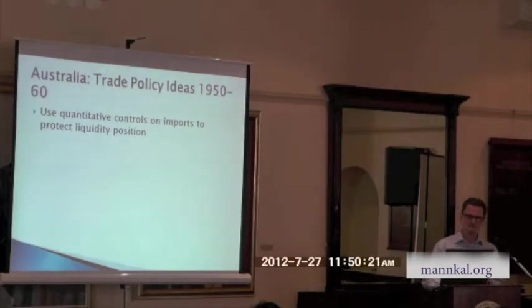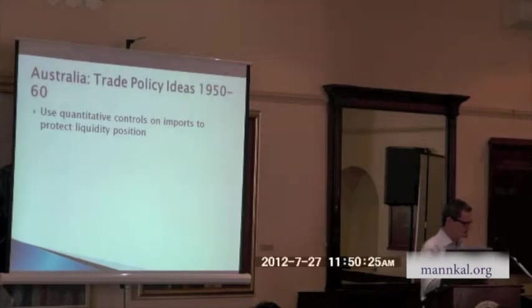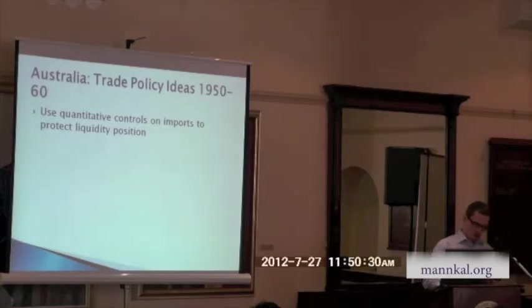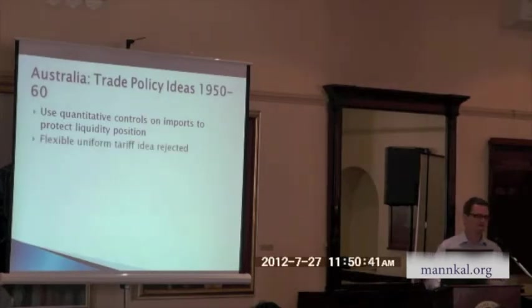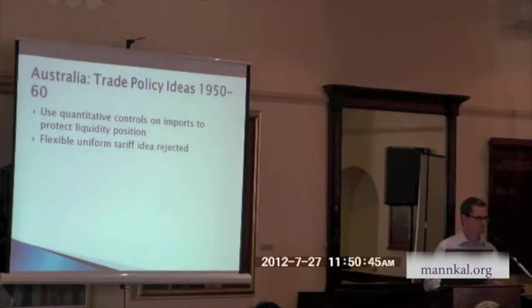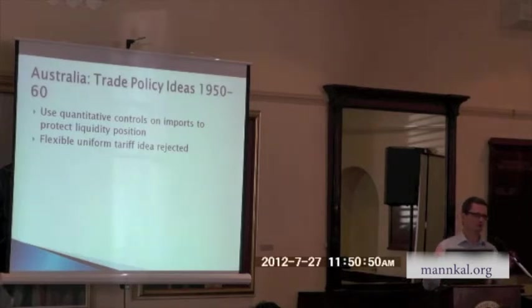In 1956, four years later, an even deeper recession in Australia, a great fall in reserves, and again the officials — Treasury — said: we need to raise quantitative controls. Quick action to deal with an emergency in the reserves. Max Corden wrote in 1958 about the need to perhaps use a flexible uniform tariff — simpler, not as distortionary as quantitative controls. Ignored. Why? We'll see.